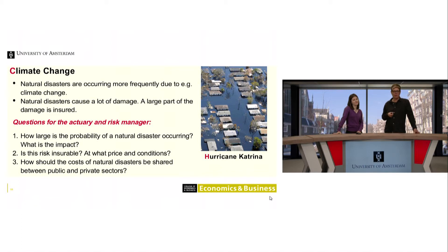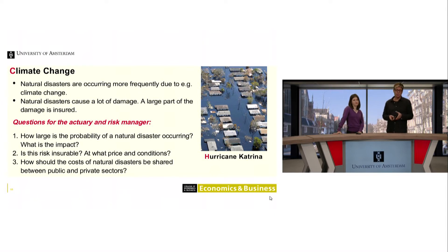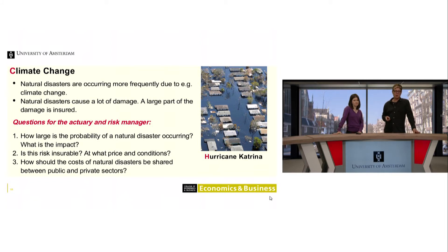That's where actuarial people come in — they need to calculate the probability that extreme events can occur, and when they do, what is the impact in financial terms. You run a financial risk: can you insure this, and if so, under what price and conditions? They're also in the middle of a debate between the public and private sector — climate concerns us all, so why should private people pay the full cost of weather damage? Shouldn't it be the government or other institutions?